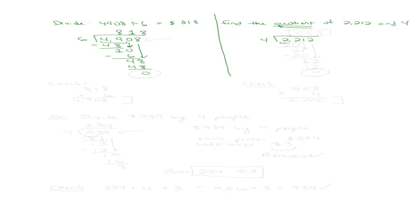Starting from the left: does 4 go into 2? It does not, so I move one over. Does 4 go into 22? It does — 5 times. 5 times 4 is 20, my remainder is 2. I bring down the 1. Does 4 go into 21? It does — 5 times. 21 minus 20 leaves 1. Bring down the 2. Does 4 go into 12? It does — 3 times. My remainder is 0. My quotient is 553.